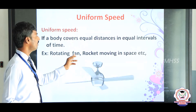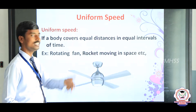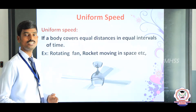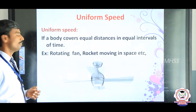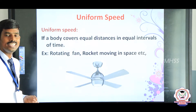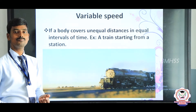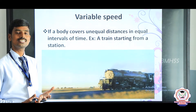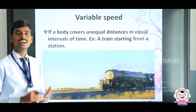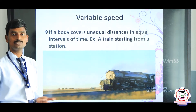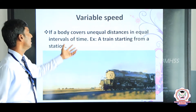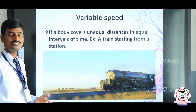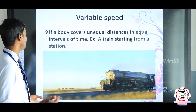For example, a rotating fan or a rocket moving in space — these are good examples of uniform speed. Next is variable speed: when an object or body covers unequal distance in equal intervals of time, this is called variable speed. An example is a train starting from a station.